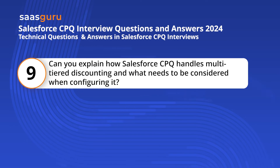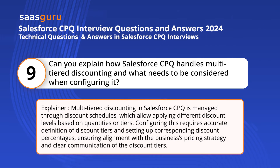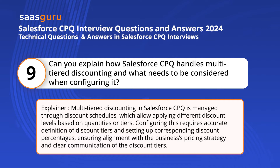Question 9. Can you explain how Salesforce CPQ handles multi-tiered discounting and what needs to be considered when configuring it? Multi-tiered discounting in Salesforce CPQ is managed through discount schedules, which allow applying different discount levels based on quantities or tiers. Configuring this requires accurate definition of discount tiers and setting up corresponding discount percentages, ensuring alignment with the business's pricing strategy and clear communication of the discount tiers.